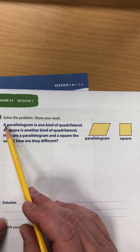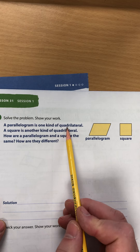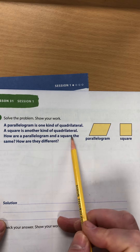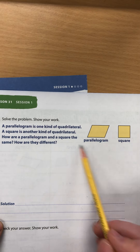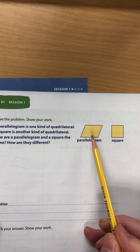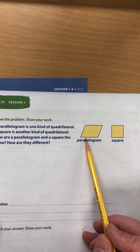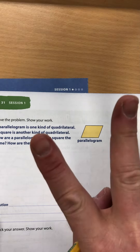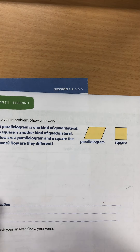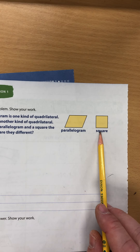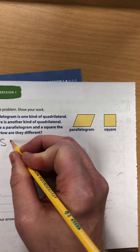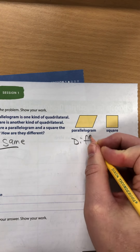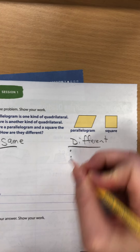Solve problem number three. A parallelogram is one kind of quadrilateral; a square is another kind of quadrilateral. How are a parallelogram and a square the same, and how are they different? Look at the parallelogram and look at the square. A square is a parallelogram — parallelograms have to have two pairs of opposite sides the same length and two pairs of opposite sides that are parallel. But how is the square different from the parallelogram? Make a list and tell how each is the same and different.